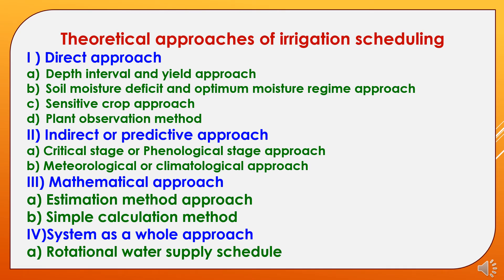Now we will study theoretical approaches to irrigation scheduling. The first is the direct approach, which covers: depth-interval and yield approach; soil moisture deficit and optimal moisture regime approach; sensitive crop approach; and plant observation method. The second is the indirect or predictive approach, which includes the critical stage or phenological stage approach and the meteorological or climatological approach. The third is the mathematical approach, which includes the estimation method and simple calculation method. The fourth is the system as a whole approach, which includes rotational water supply schedule.